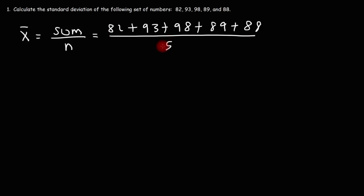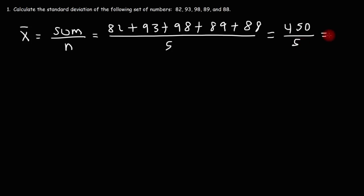So 82 plus 93 plus 98 plus 89 plus 88 gives us a sum of 450. Now let's divide that by five. 450 divided by five is 90. So that gives us an average of 90, and that is our sample mean.